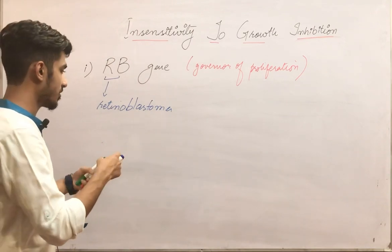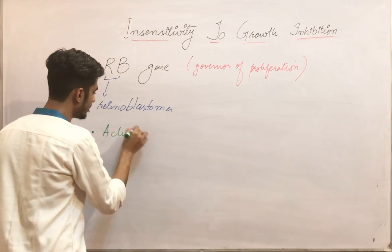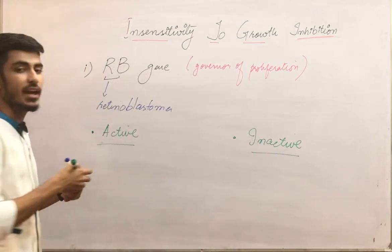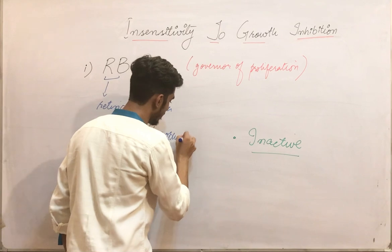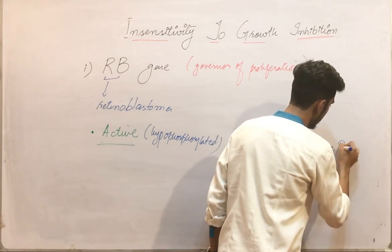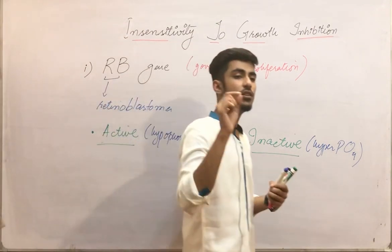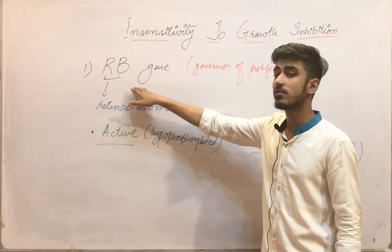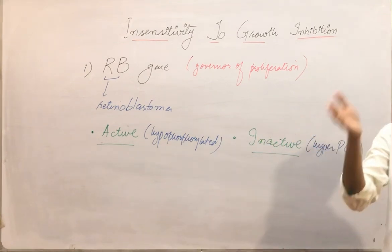The RB gene has two forms. The first form is the active form, which is basically hypophosphorylated. The inactive form is the hyperphosphorylated form of the RB gene. The active form is present in non-dividing cells. The activation of this RB gene causes cell cycle stoppage — it prevents cell cycle progression.